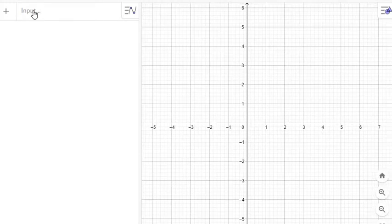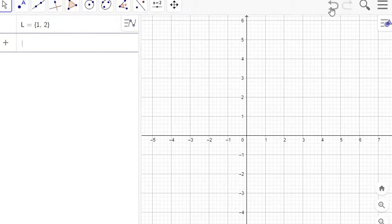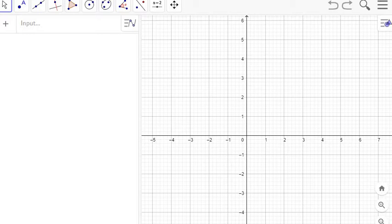We could type our list of data directly, so in the input bar I can do L equals, and then in the set brackets put whatever numbers I want to make a list out of. I'm going to click the undo arrow here. But I have a set, I think I still have them copied to my clipboard.